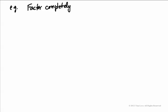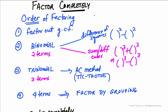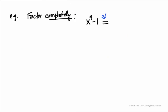Another example: factor completely x⁴ minus 1. Looking at the order of factoring, x⁴ − 1 has no common factor, but it is a binomial. So it's either a difference of squares or a difference of cubes. It can't be cubes because the exponent 4 is not a multiple of 3, so I write it as a difference of squares.